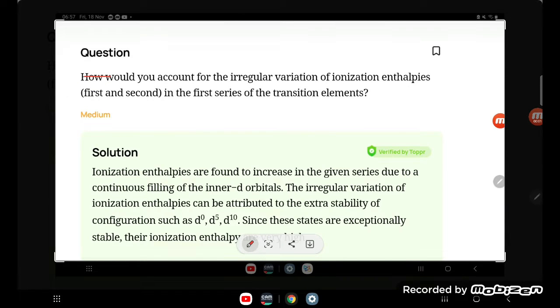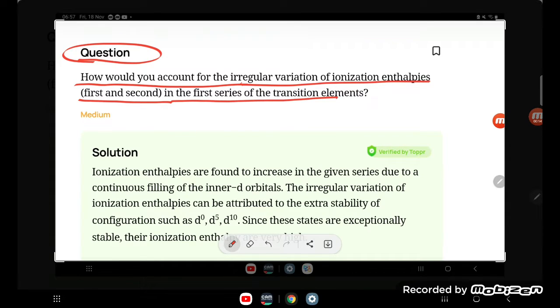Students, let's try to understand one question. How would you account for the irregular variation of ionization enthalpy, first and second, in the first series of transition elements?